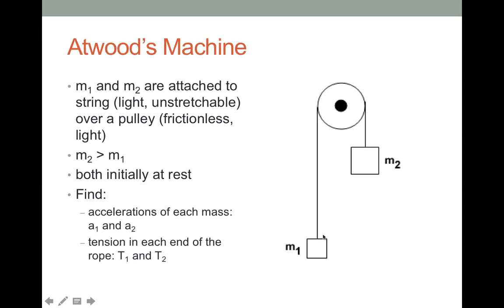Now, if the two masses are equal, nothing interesting will happen and they'll just stay at rest. So we're going to make one mass heavier than the other. I'm going to consider M2 to be the heavier of the two masses, simply because in this diagram it is larger. So we'll take M2 to be larger than M1. We also will start our system at rest. What we wish to find are the accelerations of these two masses and the tensions on both sides of the rope. That's our problem.